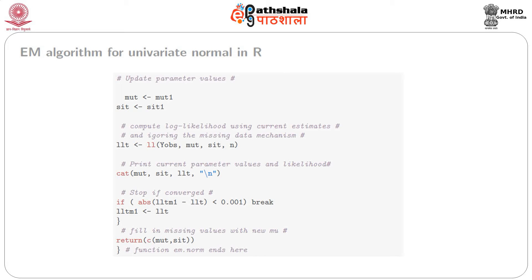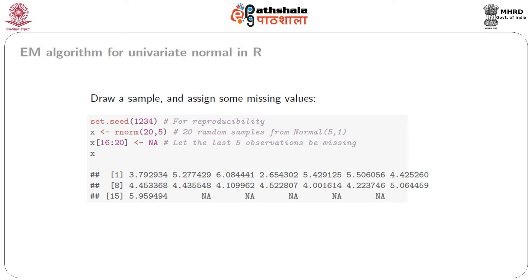Finally, the function returns the computed values of the mean and the variance. Note that Sit is actually the variance being calculated, not the standard deviation — standard deviation is the square root of the variance. To run it, we draw a sample and assign some missing values. We set the seed at 1234, generate a vector x of 20 observations from mean 5 and standard deviation 1, and then make the last 5 observations NA — so x[16:20] is NA. Printing x shows the resulting values.